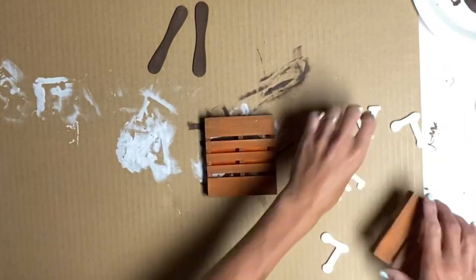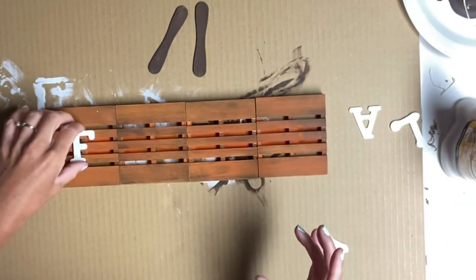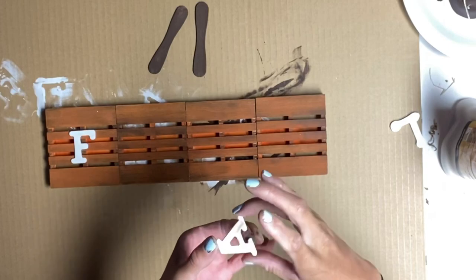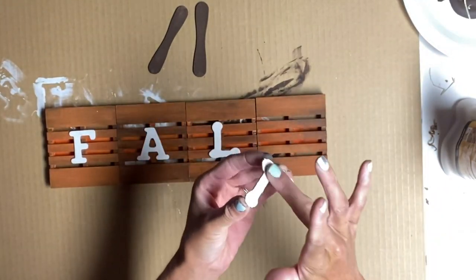I then went back to my mini wood palettes and lined them all up. I took some Elmer's wood glue and glued my letters onto the front of each palette.